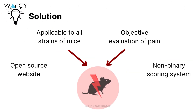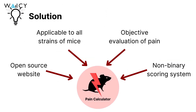My solution is Pain Calculator: an open source website for all pain researchers to freely use, applicable to all strains of mice, that objectively evaluates pain and introduces a non-binary scoring system.